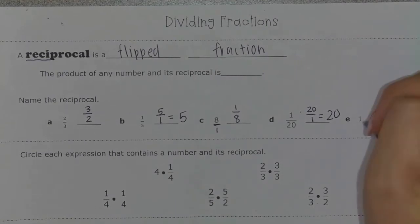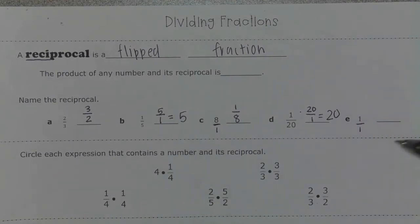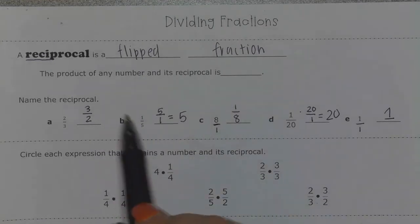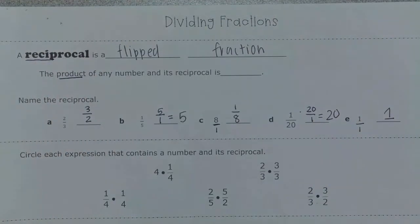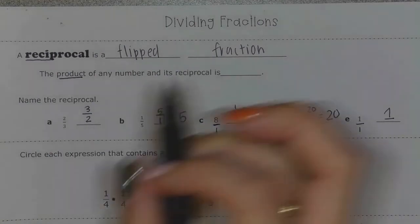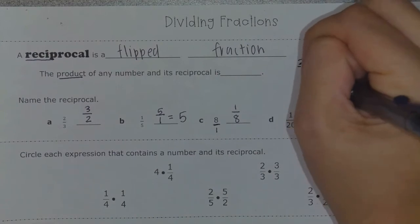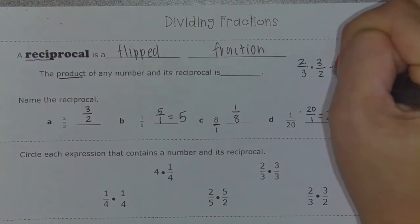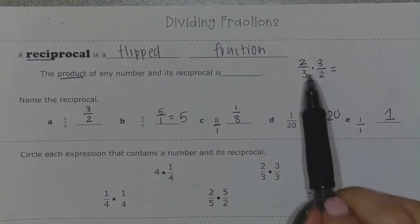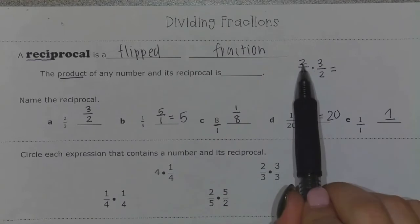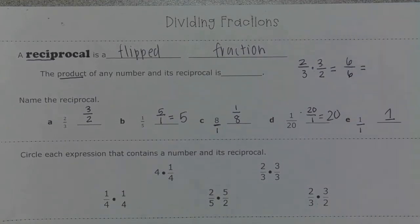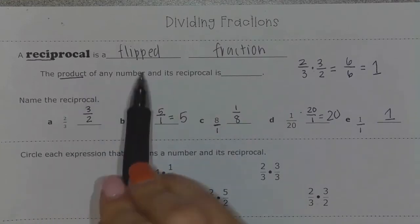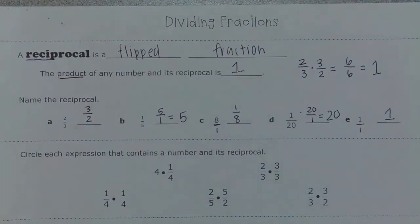The number one — every whole number has a denominator of one, but the numerator and the denominator are the same, so the reciprocal of one is still the number one. Now, the product of any number and its reciprocal: products are the answer to a multiplication problem. Using two-thirds times three-halves — top times the top and the bottom times the bottom: two times three gives me six, three times two gives me six, and six over six simplifies to one whole. So the product of any number and its reciprocal is simply one.